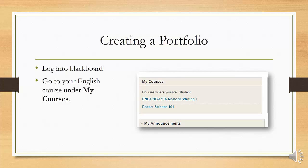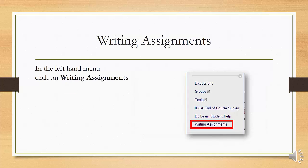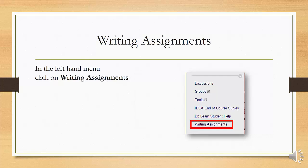If you have not yet created a portfolio, begin by navigating to your English course, then to the portfolio assignment in the writing assignments folder. Scroll to the bottom of the page and click on the portfolio assignment. If you have already created your writing portfolio, you can skip to editing the portfolio. The same portfolio should also be used for English 102.